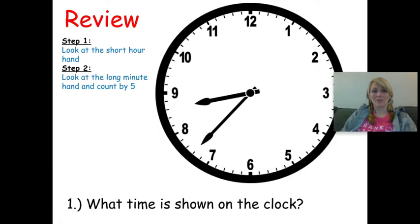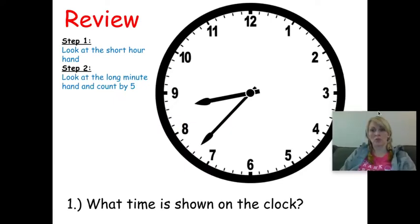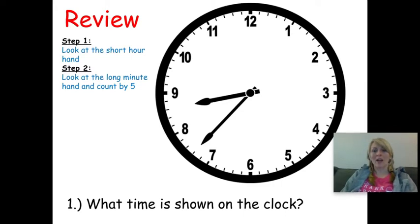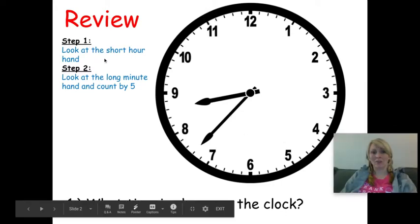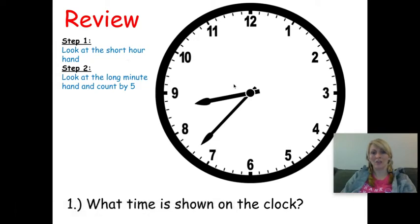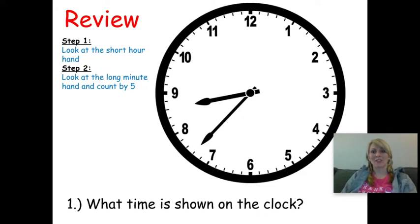Alright, so let's review. I want you to look at this clock and write down on your paper how much time you see. Remember our steps: first we're going to look at the short hour hand, write the hour, and then look at the long minute hand and count by five. I'll also have to count on by ones to get the exact time. So take a second, press pause, and see if you can tell the time on the clock.